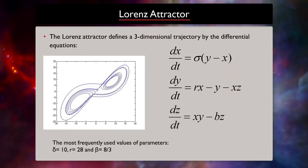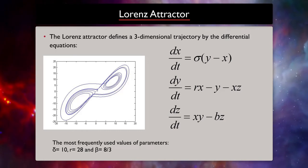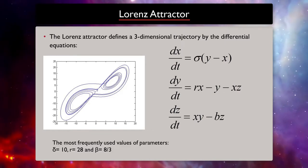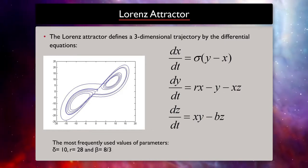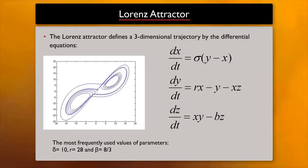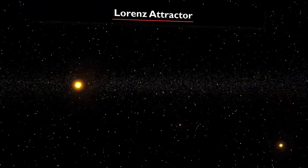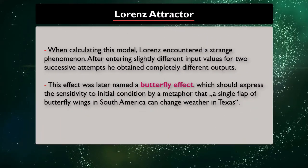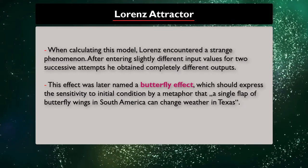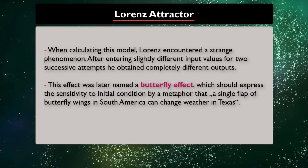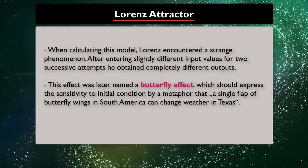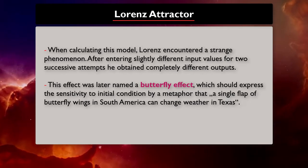The Lorenz attractor defines a three-dimensional trajectory by three differential equations and three parameters. When calculating this model, Lorenz encountered a strange phenomenon. After entering slightly different input values for two successive attempts, he obtained completely different outputs. This effect was later named the butterfly effect.